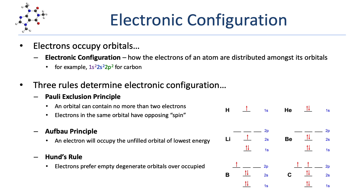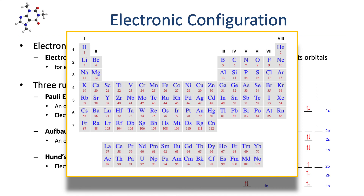There are three general rules for how electrons populate orbitals. The first is the Pauli Exclusion Principle — a two-for-one rule. The first part states that an orbital can contain no more than two electrons, meaning an orbital has three population states: empty, one electron, or two. The other part deals with electron spin and says that electrons in the same orbital must have opposing spin. We represent orbitals as horizontal lines and electrons as arrows, showing opposing spin by having arrows pointing in opposite directions.